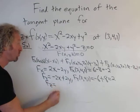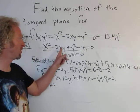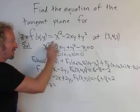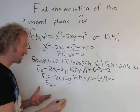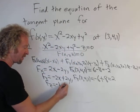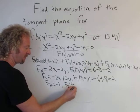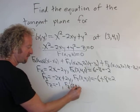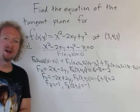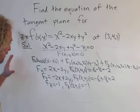For the partial with respect to z, it's very straightforward — there are no z terms in x² - 2xy + y², so those are all constants. The derivative of -z with respect to z is -1. Evaluating at (3,4,1) simply gives us -1.